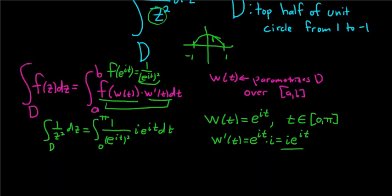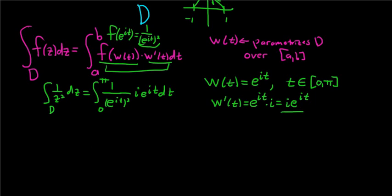Let's keep going. So it looks like one of the e to the i t's cancels. So we have i, I'll pull out the i, definite integral from 0 to pi, and we're left with 1 over e to the i t, dt.